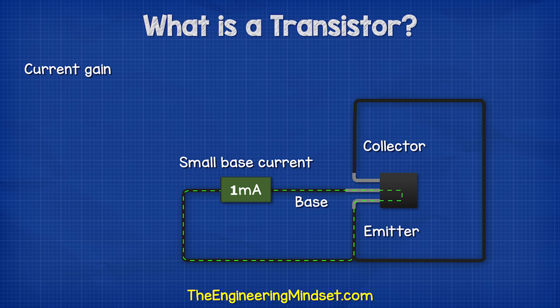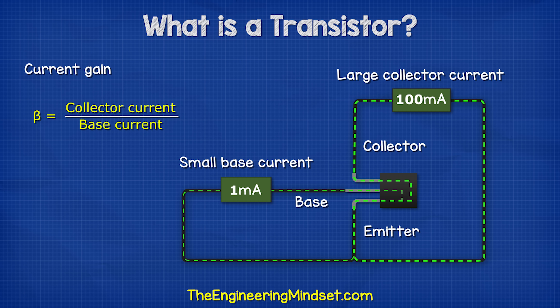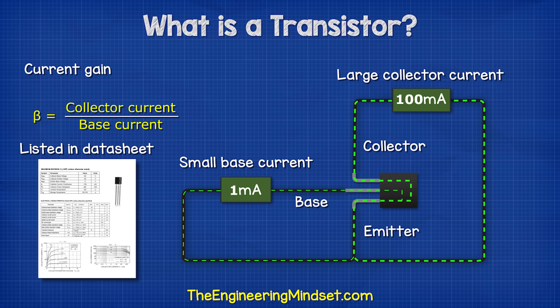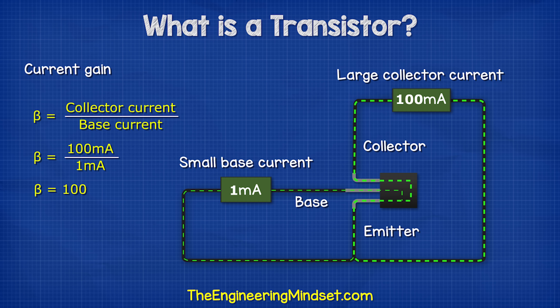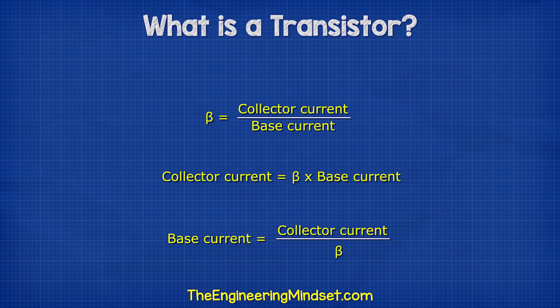Typically, there is a very small current on the base pin — perhaps just 1 milliamp or even less. The collector has a much higher current, for example 100 milliamps. The ratio between these two is known as the current gain and uses the symbol beta. We can find this ratio in the manufacturer's datasheet. In this example, the collector current is 100 milliamps and the base current is 1 milliamp, so the ratio is 100 divided by 1, which gives us 100. We can also rearrange this formula to find the currents.